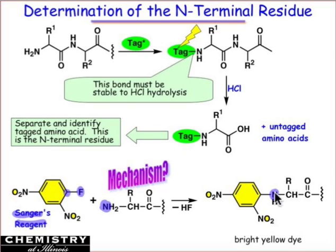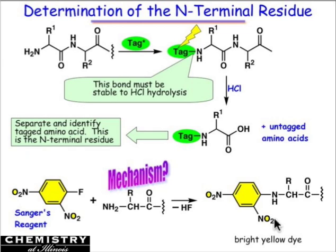The new bond formed is not susceptible to hydrolysis, so when all the peptide bonds break, there is one amino acid — whatever that N-terminal residue happens to be — that carries this tag, and it can be uniquely identified following chromatography.